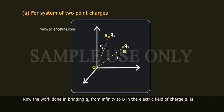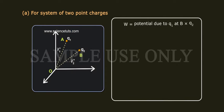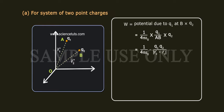Now the work done in bringing Q2 from infinity to B in the electric field of charge Q1 is W equals potential due to Q1 at B into Q2, equals 1 by 4 pi epsilon naught into Q1 by AB into Q2, equals 1 by 4 pi epsilon naught into Q1 Q2 by R2 bar minus R1 bar, equals 1 by 4 pi epsilon naught dot Q1 Q2 by R12.